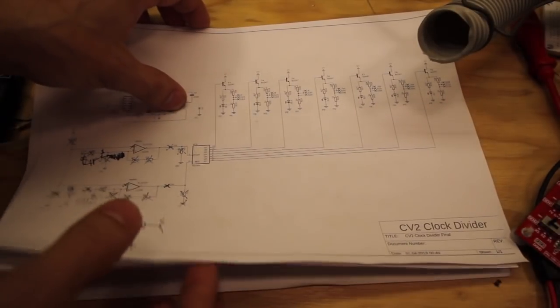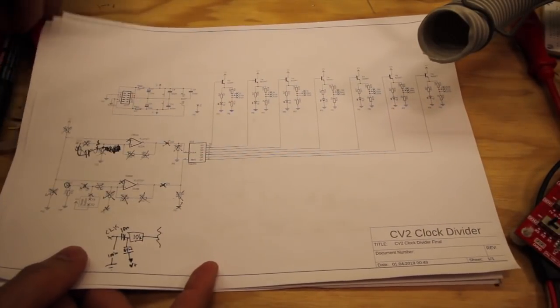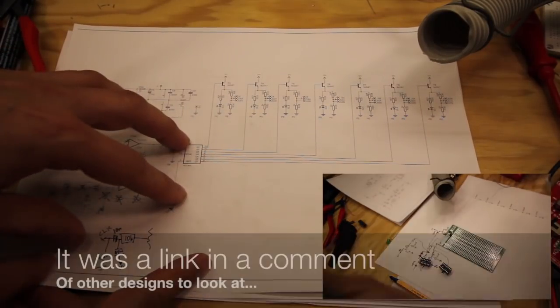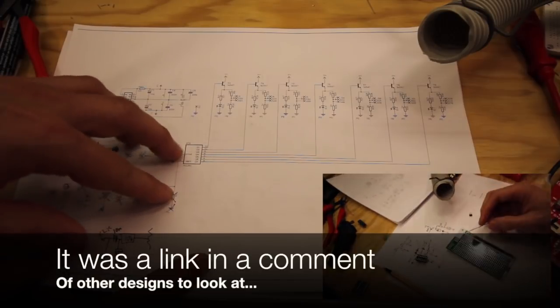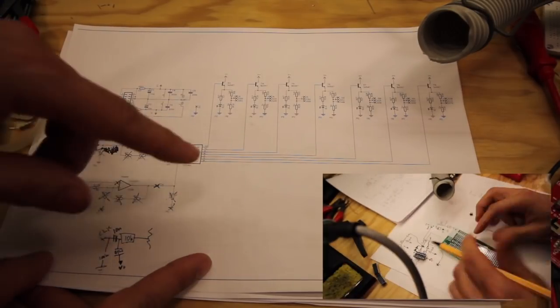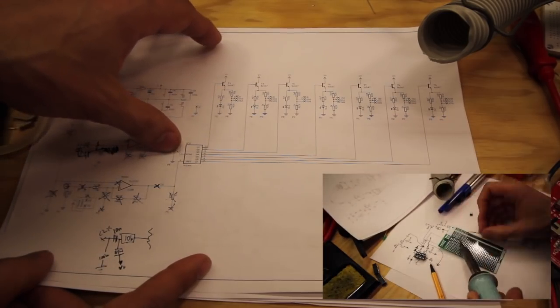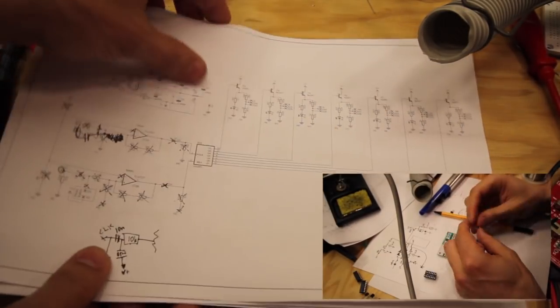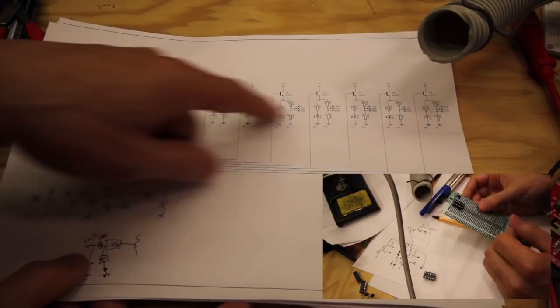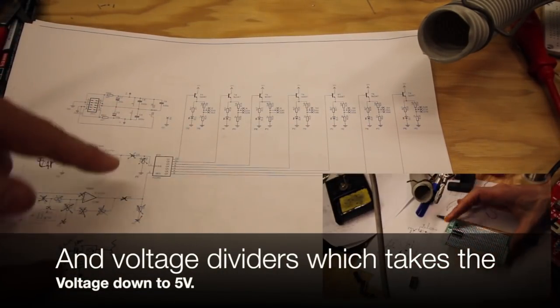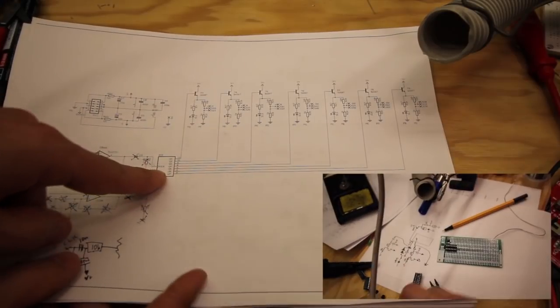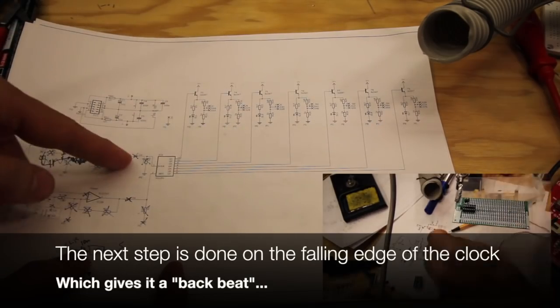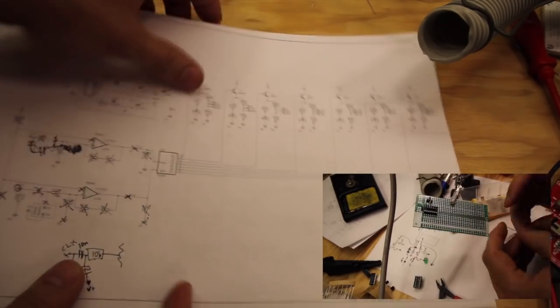So I'd like to go through a few other schematics that I looked at that I didn't build today. This is just a 4024 and buffered outputs with LEDs. This one is a mathematical clock divider, so it triggers the outputs when the input is low. We'll get back to that.